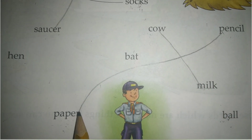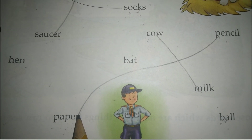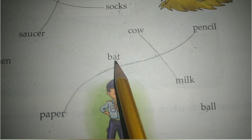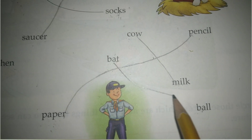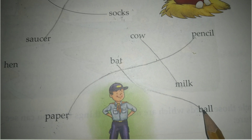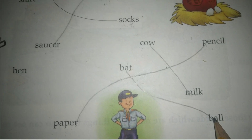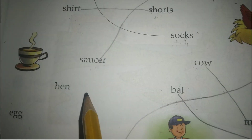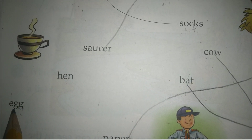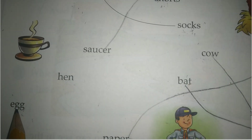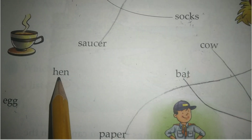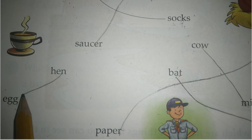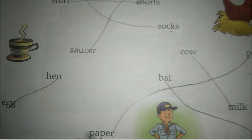Now bat — bat ko connect karenge ball ke saath. Now what is remaining: hen. Who lays the egg? Hen deti hai, toh hen ko connect karenge egg ke saath. Now this page is done.